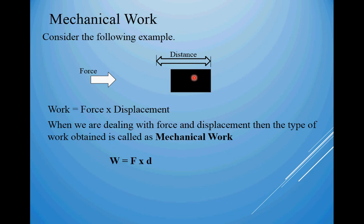Mathematically we can say that W equals to F into D, where W is the amount of work done, F is the force or the effort applied, and D is the distance or displacement covered. As we can see from the formula, the value of work done depends on two factors: the first one is the amount of effort or the force applied, and the second one is the displacement obtained due to the application of force F. So in all remaining types of works we always have these two factors: the effort applied and the changing parameter due to the applied effort.